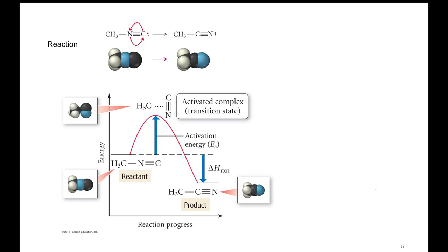It turns out that this molecule wants to do a rearrangement — it wants to put the carbon atom in the middle and the nitrogen atom on the end. That is because carbon is much more stable with four bonds; here it only has three bonds and a lone pair. It still satisfies the octet rule with eight valence electrons, but it would be much more stable with four bonds. Also, nitrogen is much more adept at handling a lone pair of electrons because it's very electronegative, so this molecule is more stable with the lone pair on the nitrogen atom.